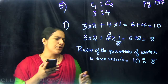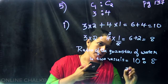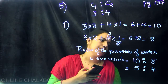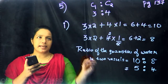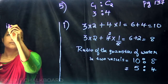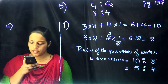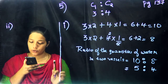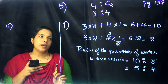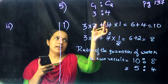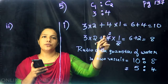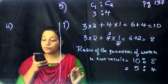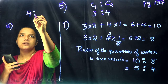The ratio of quantities of water in the 2 vessels is 10 is to 8. For the second section of this problem, what if the capacities of the bottles are in the ratio 4 is to 7 instead?